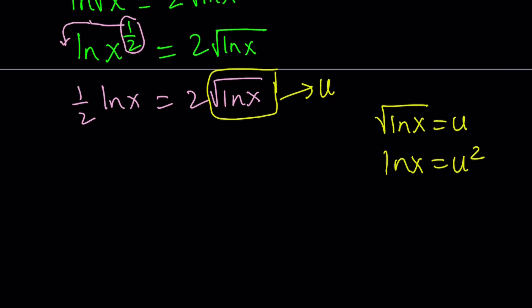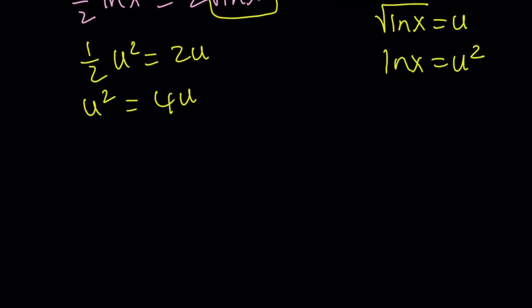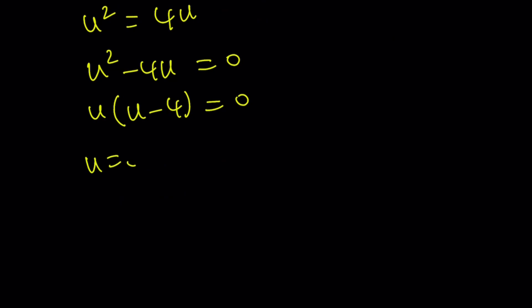Then we get the following. 1 half of u squared equals 2u. We can go ahead and multiply both sides by 2. u squared equals 4u. And then we can put everything on the same side. u squared minus 4u is equal to 0. Take out a u. u times u minus 4. You know the drill. u equals 0 or u equals 4.